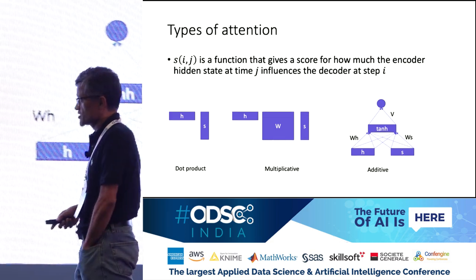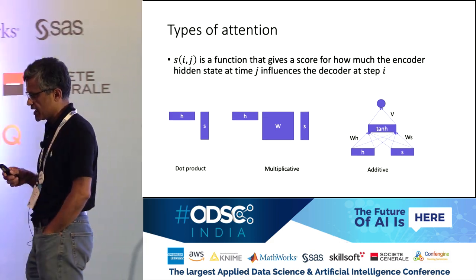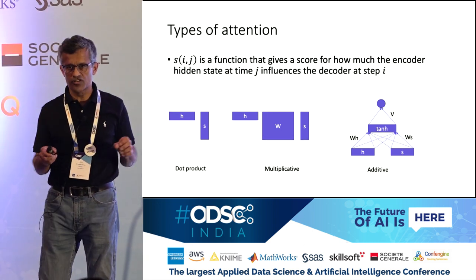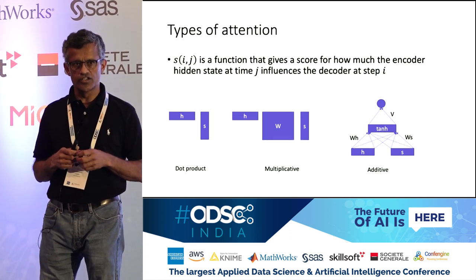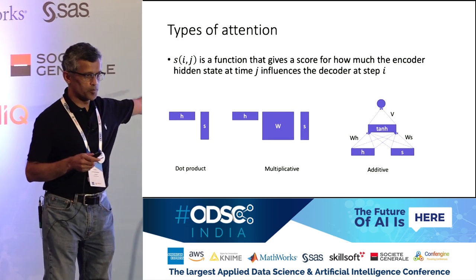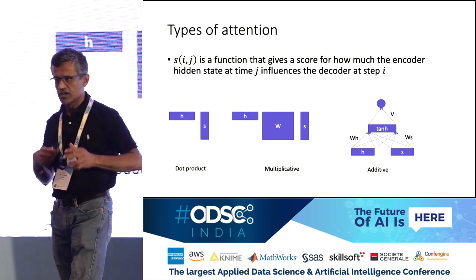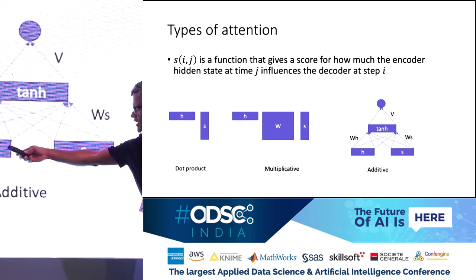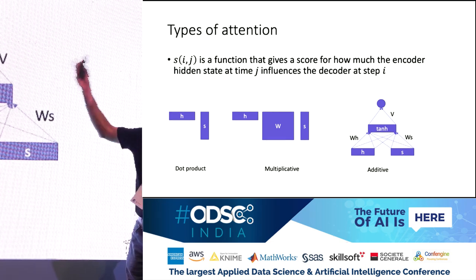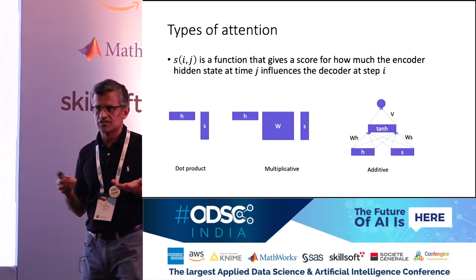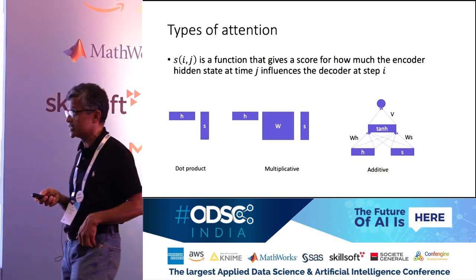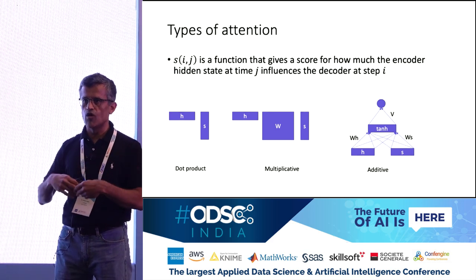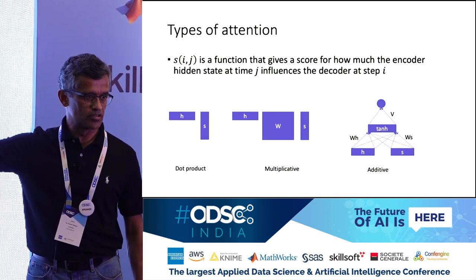There are different ways to compute the similarity function S. One approach is a dot product (H dot S), which requires the encoder and decoder hidden vectors to be the same dimension. If they differ, you can use a multiplicative approach with a rectangular matrix to still get a scalar output. Or you can use an additive approach — a small neural network that takes the concatenation of the encoder and decoder hidden representations and produces a scalar. These multiplicative and additive approaches are parameterized functions, so when you learn the model end-to-end, the weights of these attention layers are also learned.